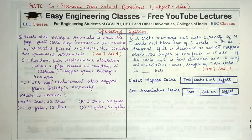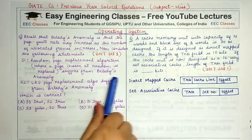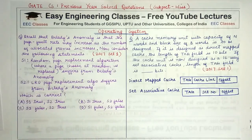The question says: recall that Belady's Anomaly is that the page fault may increase as the number of allocated frames increases. Consider the following statements. Statement S1: the random page replacement algorithm, where a page chosen at random is replaced, suffers from Belady's Anomaly. Statement S2: the Least Recently Used (LRU) page replacement algorithm suffers from Belady's Anomaly. You have to tell which of the two statements is correct.